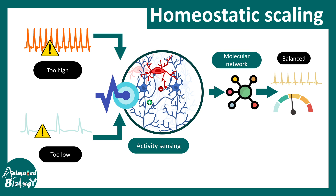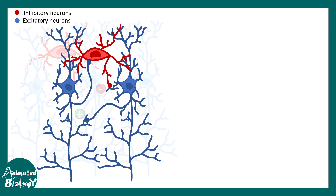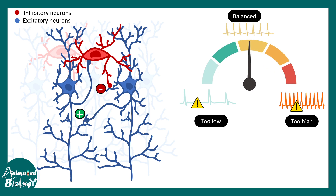Homeostatic synaptic scaling is a recent concept used to explain many neurological disorders. In epilepsy and seizures, this homeostatic breakdown leads to uncontrolled and synchronized brain activity. In any circuit there are excitatory neurons providing excitatory drive and inhibitory neurons providing inhibitory drive — like an on and off switch. If a circuit is always on or always off it is detrimental, so the excitatory-inhibitory balance is critical.